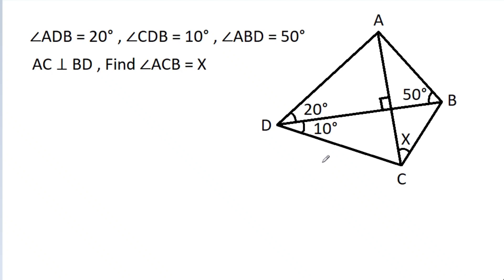In this video, we have given that angle ADB is 20 degrees, angle CDB is 10 degrees, and angle ABD is 50 degrees, and AC is perpendicular to BD. Then we have to find angle X.